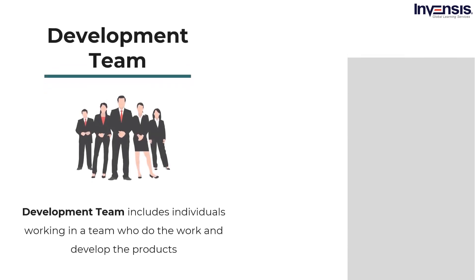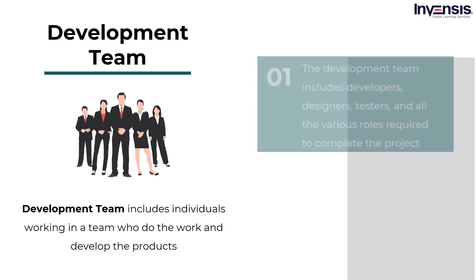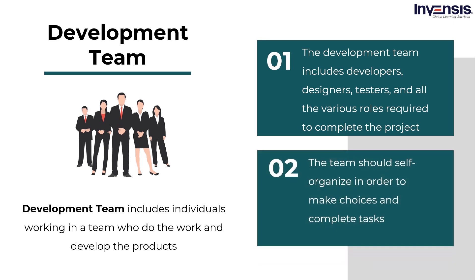The development team includes individuals working in a team who do the work and develop the products. The development team does not only include developers — it also includes designers, testers, and all the various roles required to complete the project. The team should self-organize in order to make choices and complete tasks. Self-organization does not mean disregarding the organization; rather, it means enabling those closest to the job to do what is necessary to address the problem. These are the three prominent roles in a Scrum team.